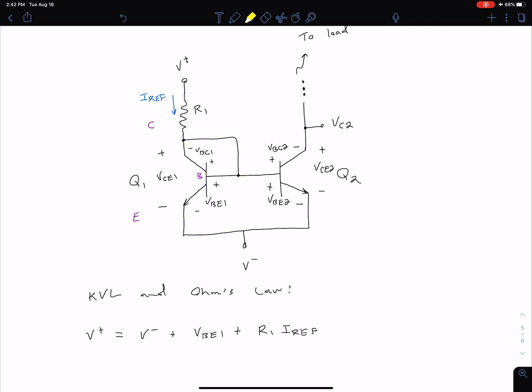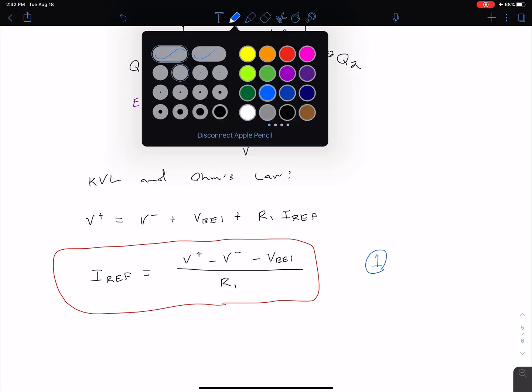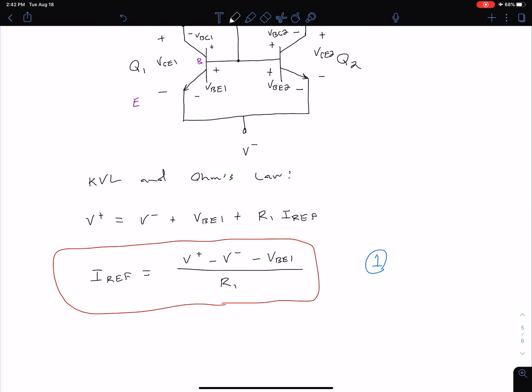Now we can rearrange this equation to solve for our reference current value. We can say IRef equals, we're going to have a fraction with numerator V+ minus V- minus VBE1 divided by R1. Let's box this in red. This is an important equation for our two-transistor current source. To be consistent with the notes, I'm going to call that equation 1.